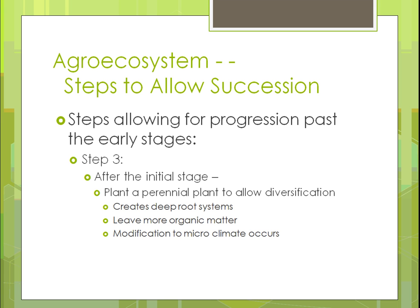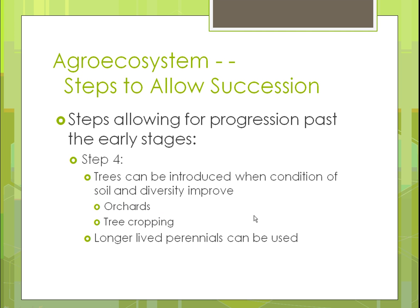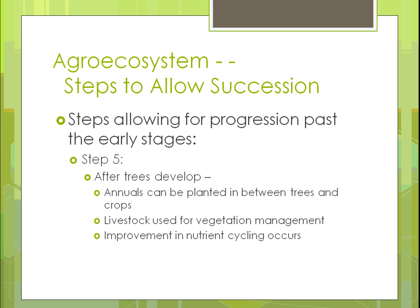A perennial can also modify your microclimate depending on the type of crop — your local climate could change based on that plant being there more of the time. Step four is introducing trees to improve the environment and the soil. You could put in an orchard or do tree cropping where you grow trees that help stabilize the soil and can be sold to nurseries. Longer-lived perennials provide diversity for different insects, and different perennials can help manage disease problems in crops you're growing.